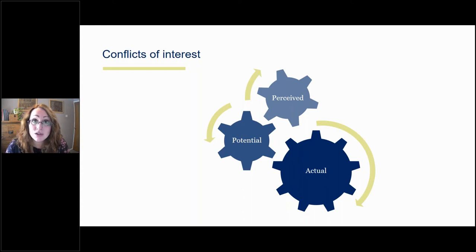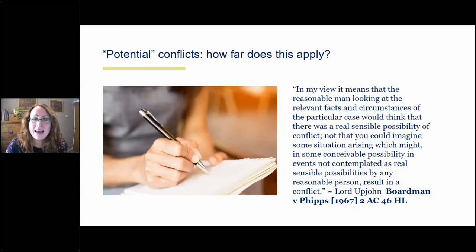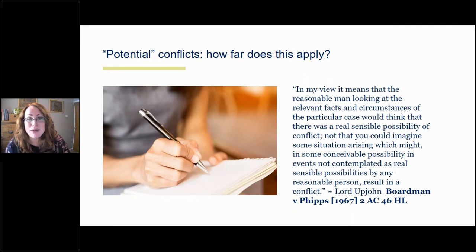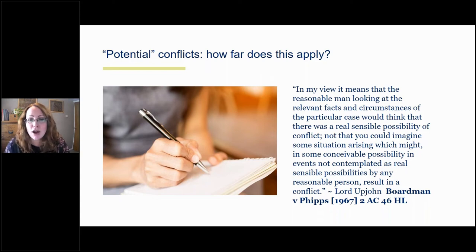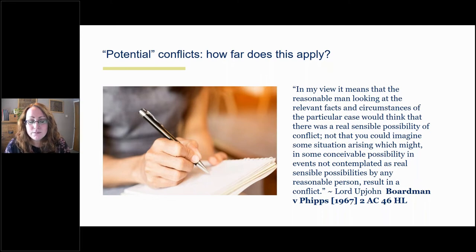In terms of potential conflicts, how far does this go? Lord Upjohn in Boardman and Phipps states that the test is a test of objective reasonableness. You're not expected to go to extreme lengths to think of any possible scenario where there might be a conflict. You're looking at situations where there's a real sensible possibility of a conflict arising — not just any potentially conceivable, far-fetched notions.